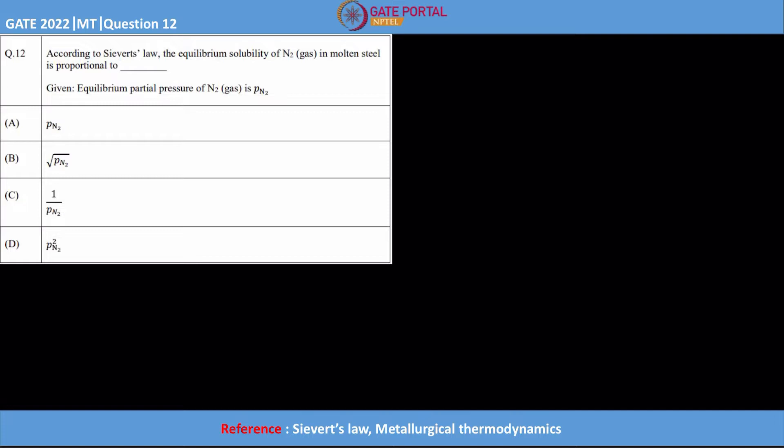Hello guys, this is question number 12 from GATE 2022. The question says according to Sievert's law, the equilibrium solubility of nitrogen in molten steel is proportional to, and we have four different options.